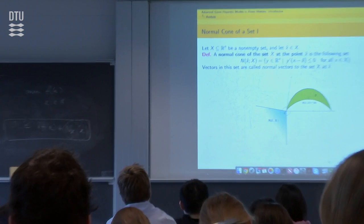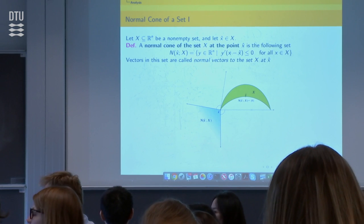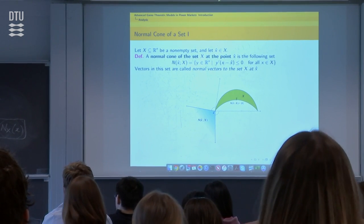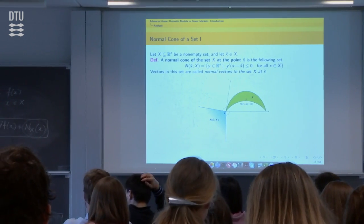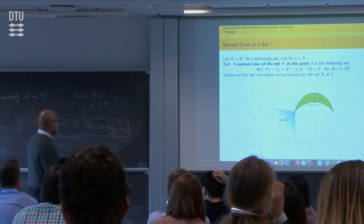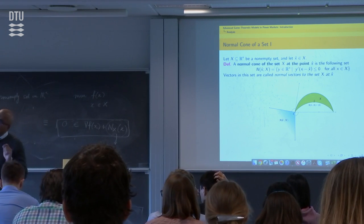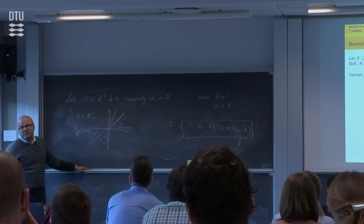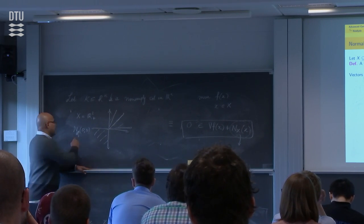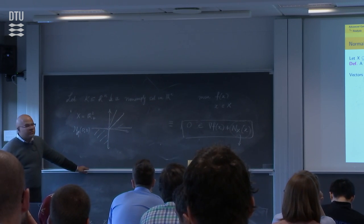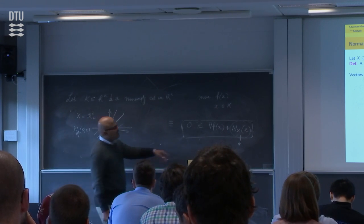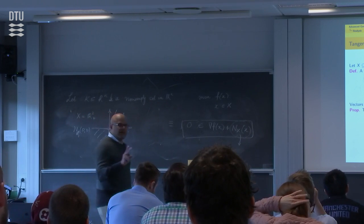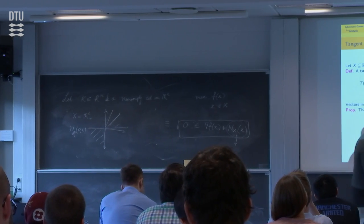The set may be non-convex, but the normal cones are still closed and convex. In the generalized equation formulation, the notion of openness or closeness applies to the feasible set X — and that set is closed. R^n_+ is closed, and the normal cone is closed by definition.